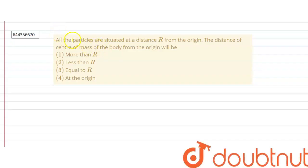Hello, this question says: all the particles situated at a distance R from the origin, the distance of the center of mass of the body from the origin will be. Four options are given, we have to check which option is correct.